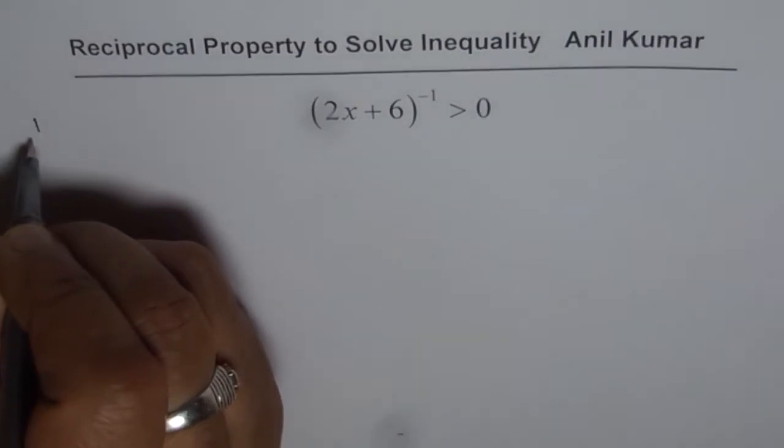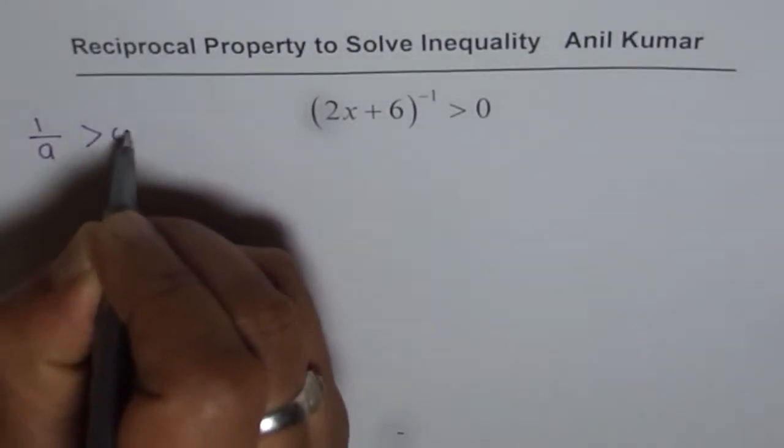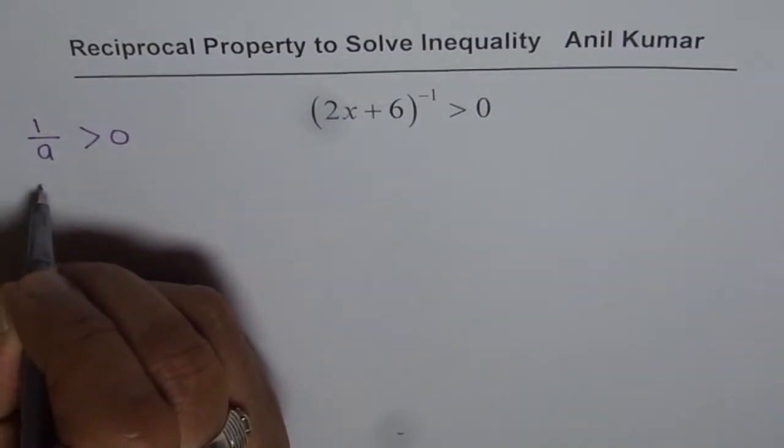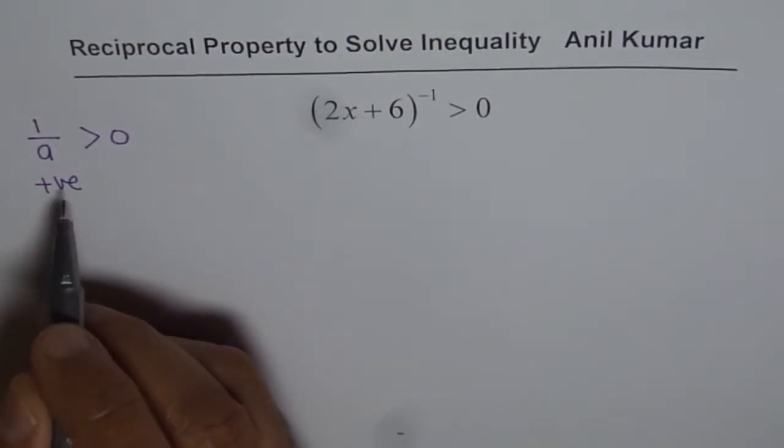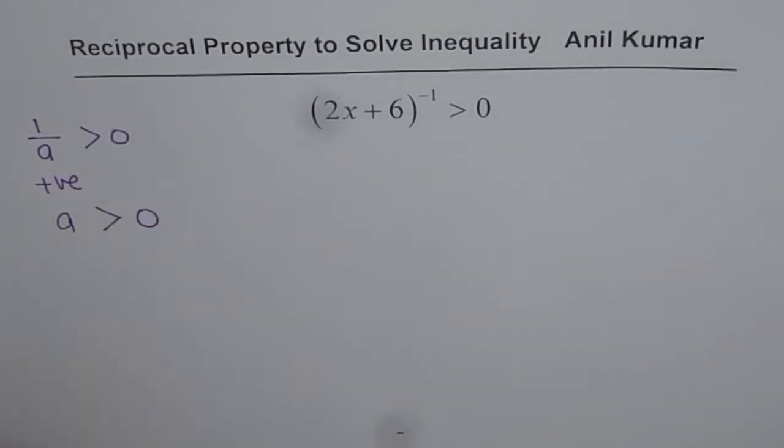If you have any general term 1 over a greater than 0, that really means that this 1 over a is positive. So if 1 over a is positive then a is also positive, that means a is also greater than 0.